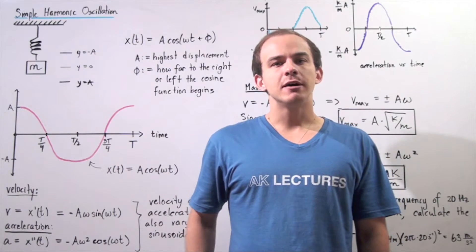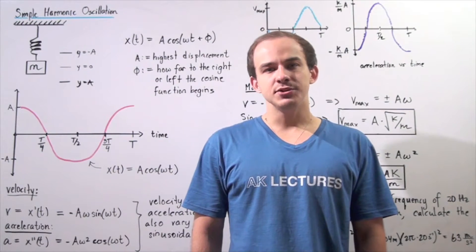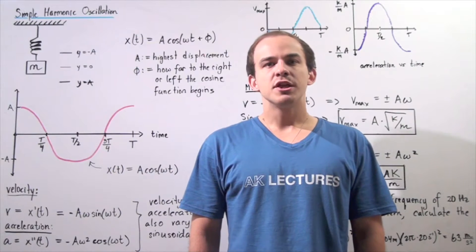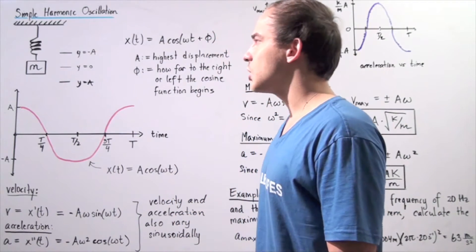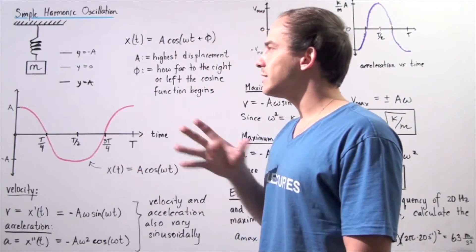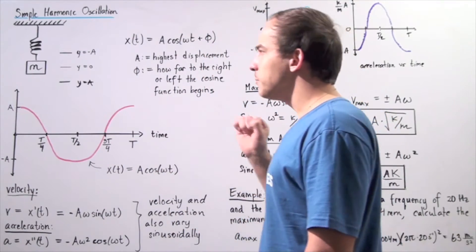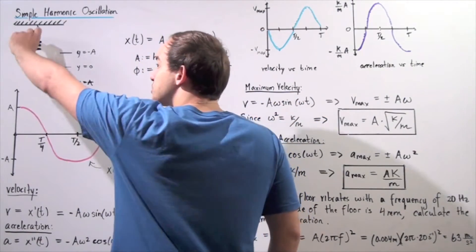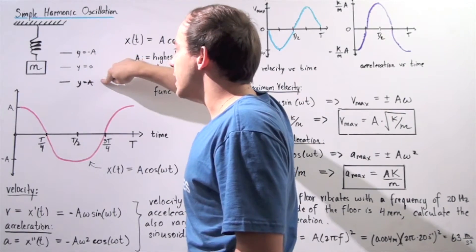Let's continue our discussion of objects undergoing simple harmonic oscillation. Recall that simple harmonic oscillation means that our object experiences a restoring force that obeys Hooke's Law — the restoring force is directly proportional to the displacement. Let's take the same object from the previous lecture: a mass attached to a coil spring. Its equilibrium position is y = 0, and we pull it down, stretching the spring a distance A.